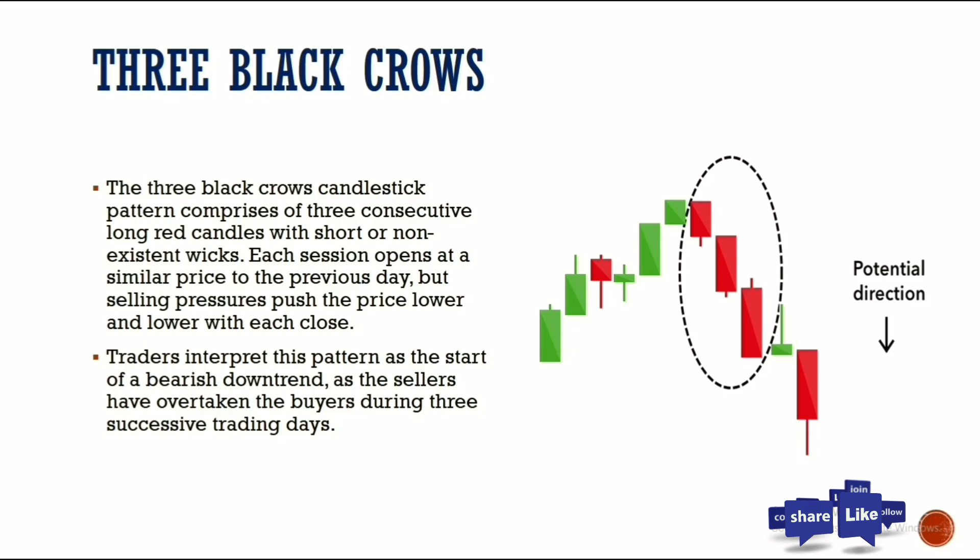Finally, we have the three black crows. These are three very strong bearish candles. Traders interpret this pattern as the start of a bearish downtrend, as the sellers overtake the buyers during three consecutive trading days. This pattern is seen with strong momentum to the downside and small wicks, giving us a sign of selling pressure and likely continuation of a bearish market.